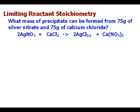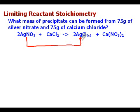Once we do that, now we have to figure out what we're doing here. In this case we've got information about both the reactants. We've got 75 grams of silver nitrate — that's this one here. And we're going to convert in a stoichiometry problem to convert to product AgCl. That's our precipitate; it's not soluble.